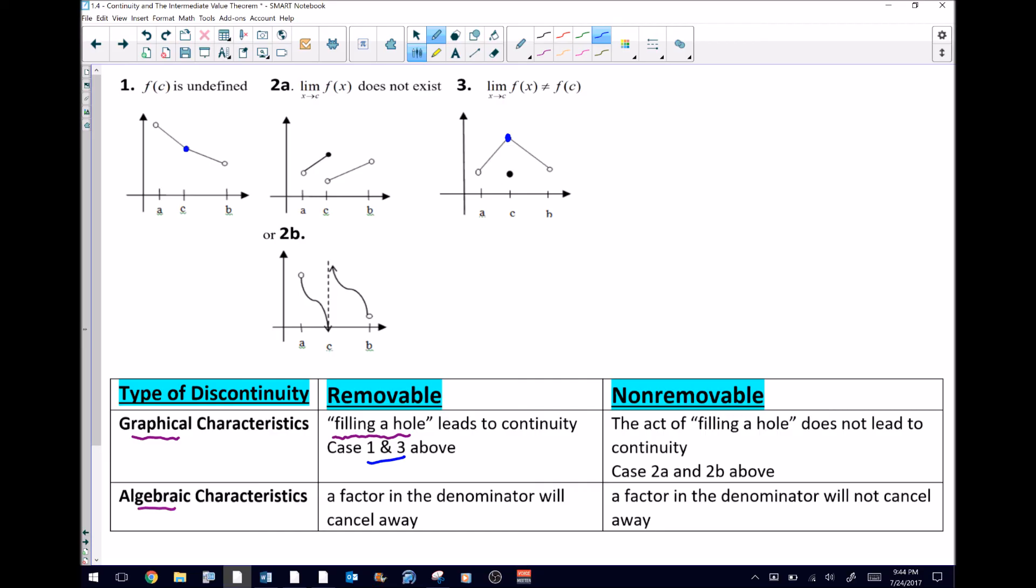The graph in picture three is also going to fall into that category. Now I know if you were to fill in that hole you don't have a function because you fail the vertical line test, but that's not what we're really concerned with. Just the simple hole being filled causing the function to be continuous will allow us to classify it as removable.